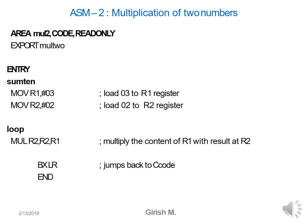The second program is multiplication of two numbers. R1 is moved with 3 and R2 is moved with 2. The instruction MUL R2, R2, R1 multiplies the content of R1 with R2. In the C program, call 'multo' instead of sum10. Save this with a .asm extension, add it to the source group, and make sure both .c and .asm codes are under the target before running.